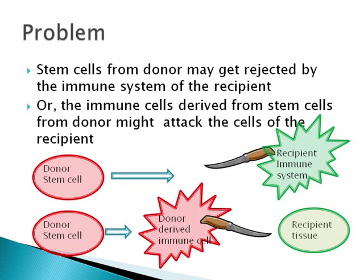Now we have come to the interesting part. What is the problem we are trying to solve? You may have heard about organ transplants, bone marrow transplants and other transplants. In these therapies, healthy donor cells, tissues or organs are transplanted into the patient to replace the corresponding diseased parts. Increasingly, these transplants are based on stem cells.